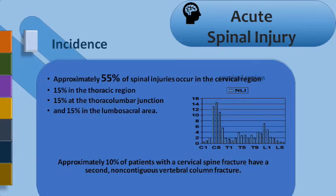It is a very common injury. The annual incidence is around 15,000 per million population every year. Out of that, around 55% of injuries occur in the cervical region, and the rest occurs in thoracic, thoracolumbar, and lumbosacral region. It is very important that if you find injury in one region, do look for other regions because 10% of patients will have fractures in other regions as well.